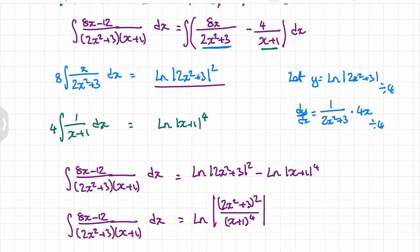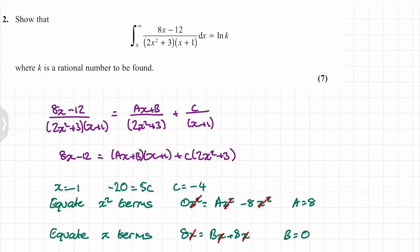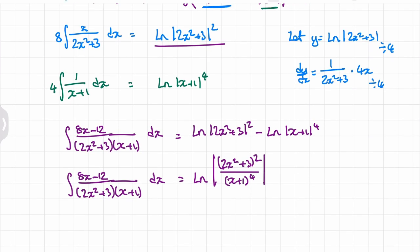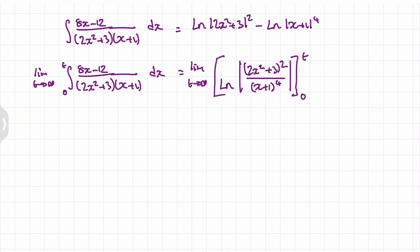Now we consider our limits. We're told to use limits 0 to infinity, but we can't substitute infinity directly as it's undefined. Instead, we integrate between 0 and t, then take the limit as t tends to infinity. So we write the result with limits 0 to t, and state that t tends to infinity.